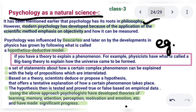Psychology was influenced by Descartes — you should know that Descartes played an important role in the beginnings of psychology. Psychology was also influenced later on by developments in physics, such as what is called the Big Bang Theory.